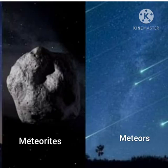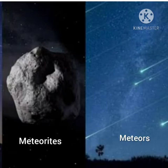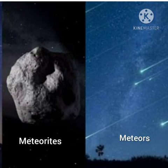We see streaks of light in the sky at night. These are called shooting stars or meteors. They are rocky materials entering the earth's atmosphere that burn completely due to friction and the oxygen present in the air, so we see a streak of light. The bigger pieces may not get completely burnt and may hit the earth. The meteors which reach the surface of the earth are called meteorites.